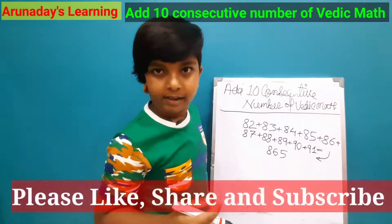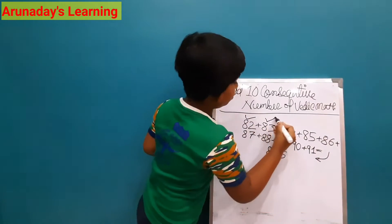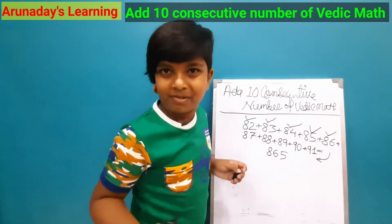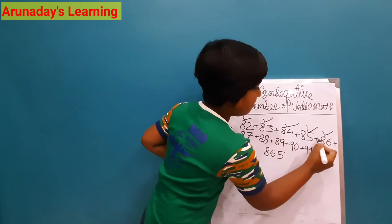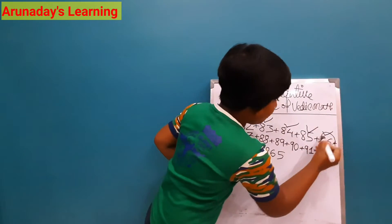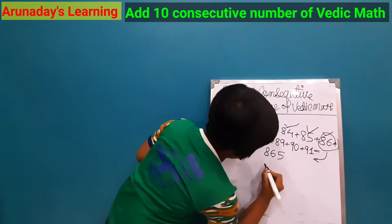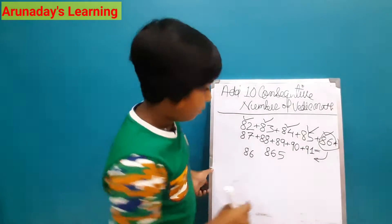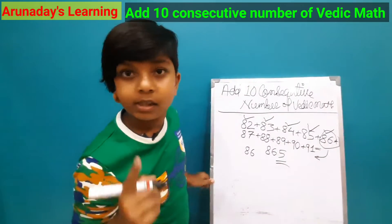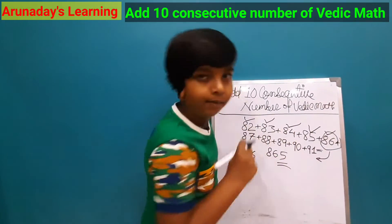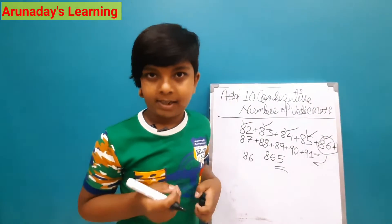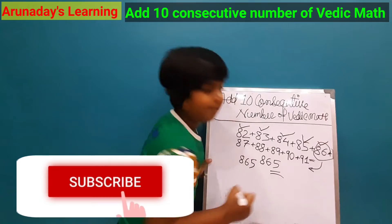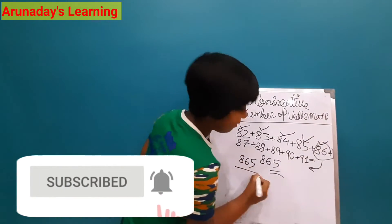We will count 5 steps from the first number. So 1, 2, 3, 4, 5 — we have come to 86. We will sit here at 86. That's why we put a 5 at the end. So our answer is 8, 6, 5.